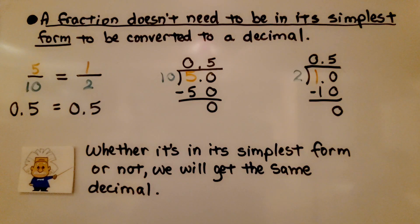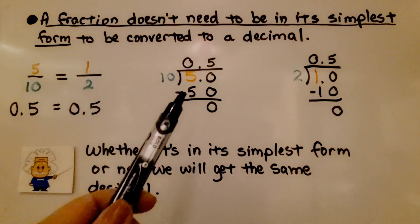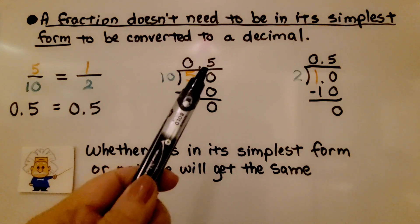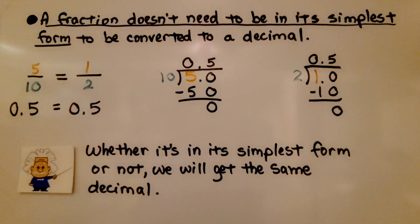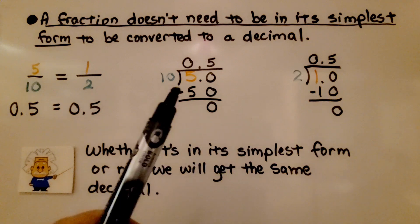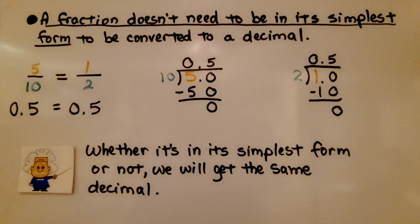A fraction doesn't need to be in its simplest form to be converted to a decimal. 5 tenths is equal to 1 half. If we do 5 divided by 10, we get 0.5, and if we do 1 divided by 2, we also get 0.5. If they're equivalent fractions, we get an equivalent decimal regardless of whether it's in its simplest form or not.